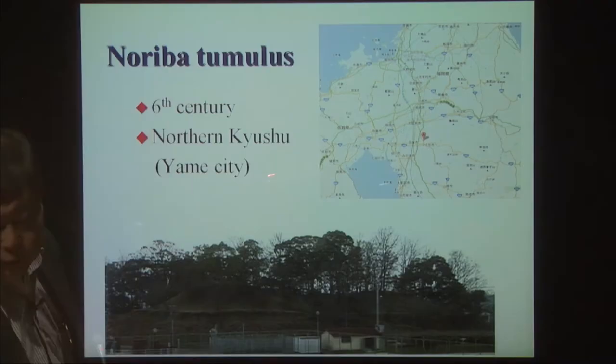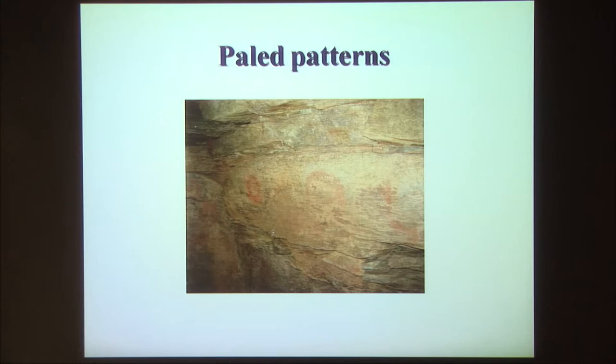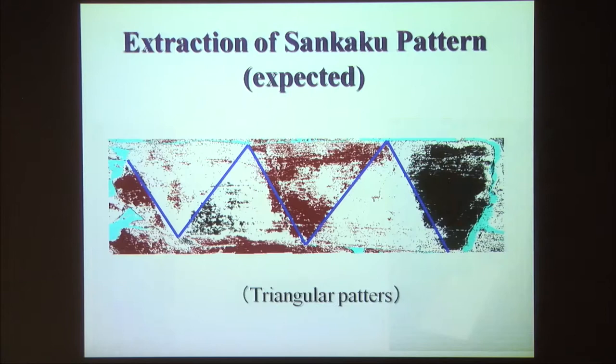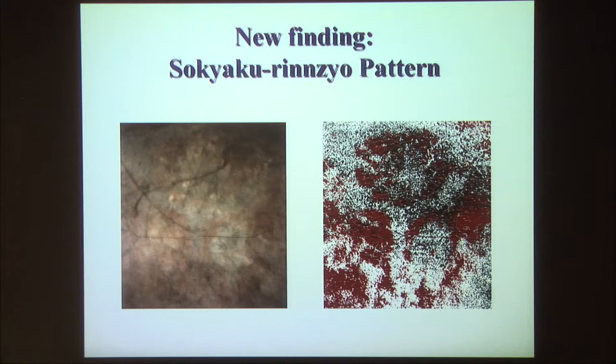Another example is the Noriita tumulus. Kyushu National Museum was interested in creating digital contents. The problem was the pattern was thin and we could not see any pattern at all. By running spectrum analysis and layer analysis, we found triangular patterns — which were originally expected as common in that area. But we also found a Sokyakurinjomu — a two-foot, man-shaped pattern — which was originally believed not to exist in that area. By running layer analysis, we can find this kind of unexpected pattern.